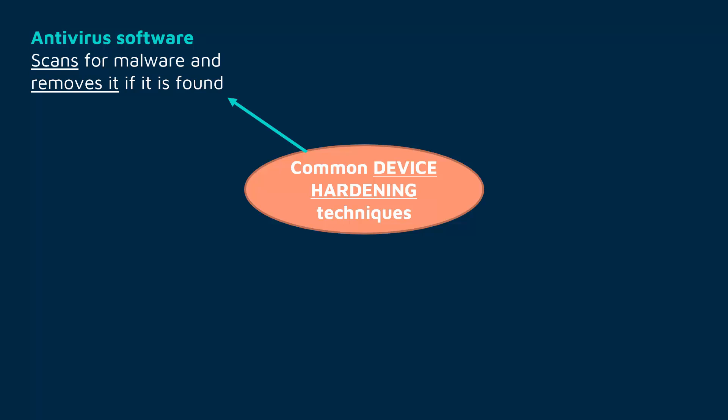Antivirus software is something you'll be aware of, but in terms of what it does it has a very specific definition. What antivirus software does is scan for malware and remove it if it is found — so it's detecting malware and removing it if detected. It's called antivirus software, but as we know there are different types of malware and a virus is just one type. Antivirus software is not going to ignore a worm or a trojan — it's scanning for all malware. It's just that the virus is the most well-known one, which is why we call it antivirus software.